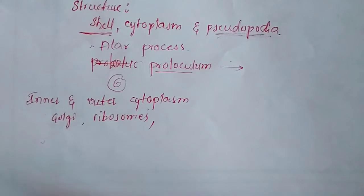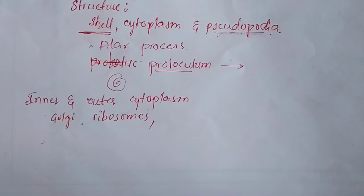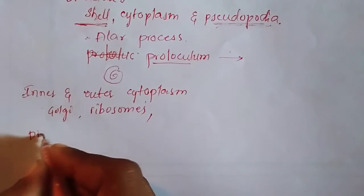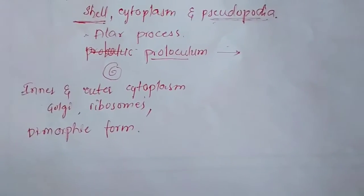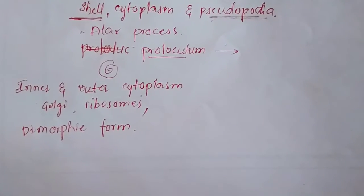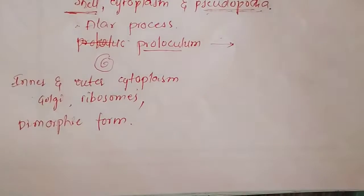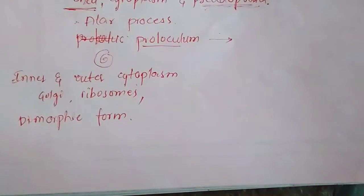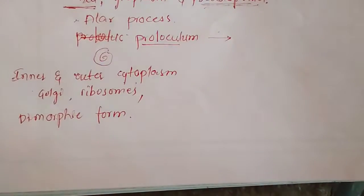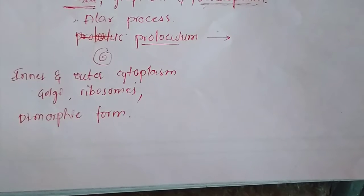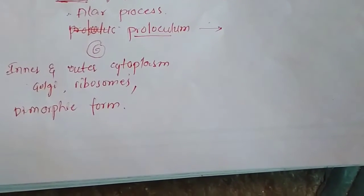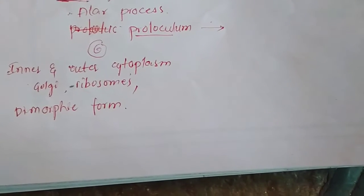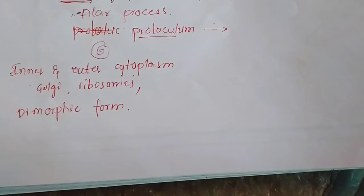Elphidium exists in two different forms and exhibits an alternation of generations. The two different forms of Elphidium are the megalospheric form and the microspheric form. The megalospheric form has a larger proloculum, which is the initial chamber responsible for the formation of the shell. As the organism grows, the number of chambers around the proloculum also increases, leading to the formation of a complete shell.